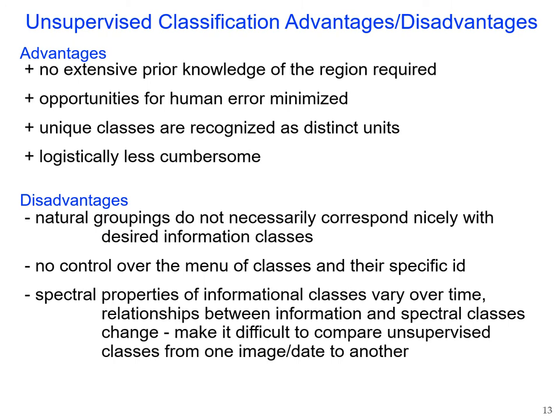To review unsupervised classification — advantages: no extensive prior knowledge of the region is required, the opportunity for digitization errors is minimized, unique classes will be recognized as distinct units, and it's logistically less cumbersome without having to deal with training data sets. Disadvantages: natural groupings don't necessarily correspond to your information classes, you have no control over the menu of classes, and spectral properties vary over time and between scenes, making it difficult to reuse results across images — unlike supervised classification, which can be applied to another image.